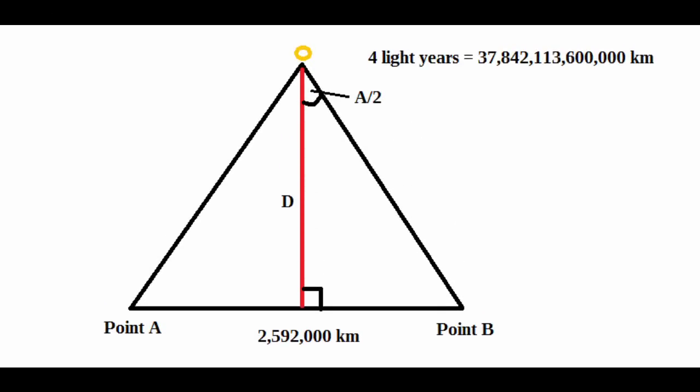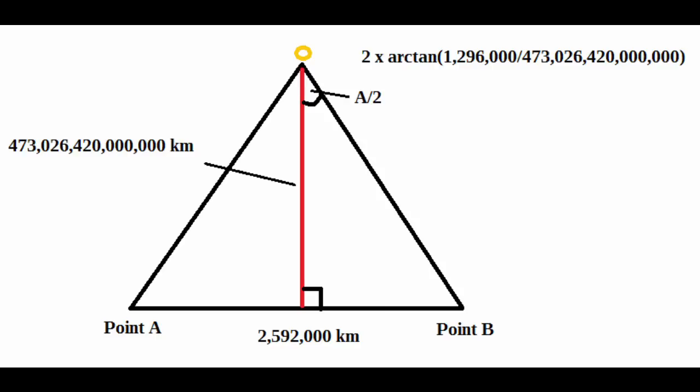For stars 50 light years away, which would be 473,026,420,000,000 km away, the angular size of the motion blur observed in a day-long exposure would be about 0.00000003 degrees, or about 0.001 arcseconds.